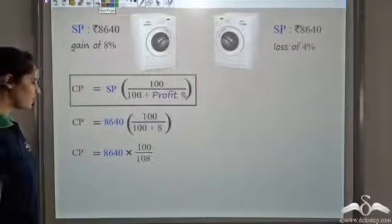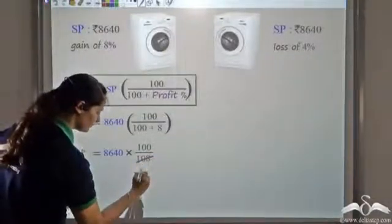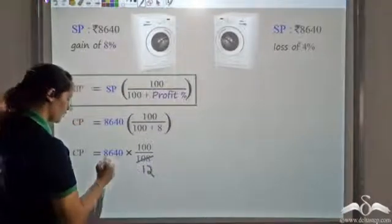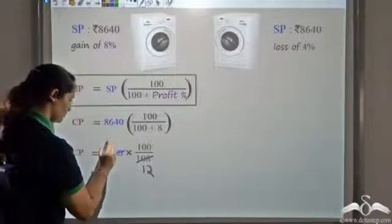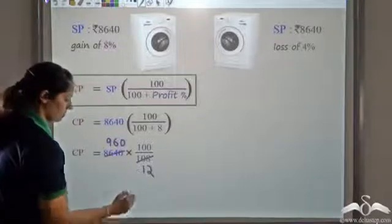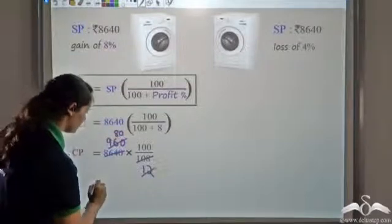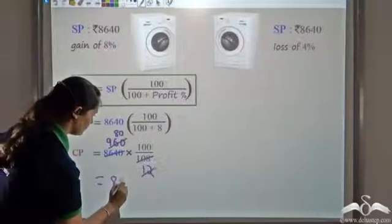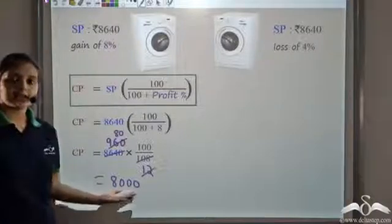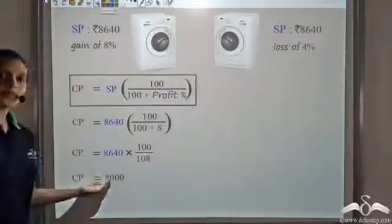Solving this, we get 12 into 9, which gives us a cost price of ₹8000 for the first washing machine.